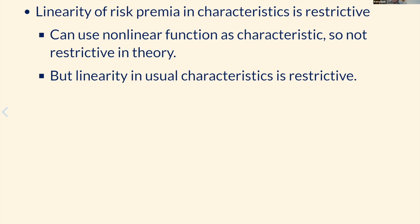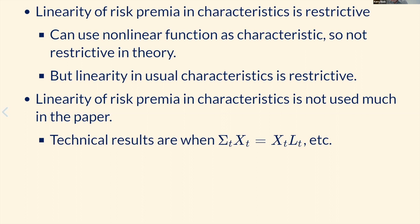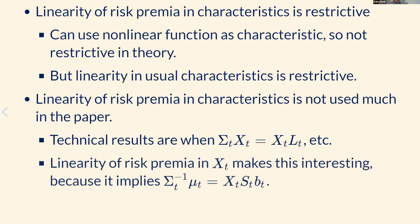A more constructive point: this linearity assumption is not used very much in the paper. The paper is really about when covariances are spanned by characteristics or transformations of characteristics — nothing to do with risk premia being linear. The only reason risk premia come in is that under the linearity assumption, spanning the covariance matrix implies finding the mean-variance frontier. It would be helpful if the paper separated more clearly this assumption from the covariance analysis, making clear that the analysis is largely independent of it.